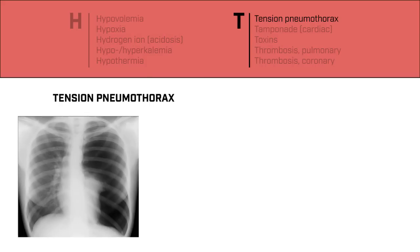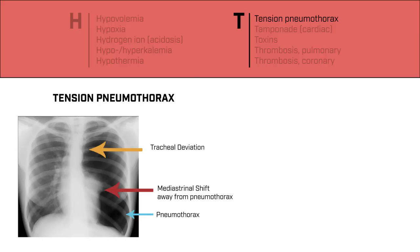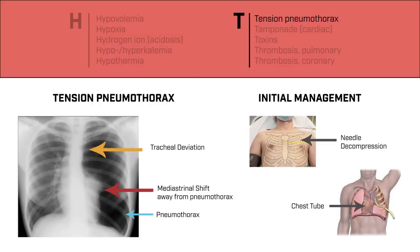Tension pneumothorax occurs when there is air in the pleural space. With enough air in this space, a shift in the mediastinum can occur, which can compress the blood vessels leading back to the heart. As a result, preload is decreased, leading to a decrease in cardiac output, which can lead to cardiac arrest. Patients may have decreased breath sounds on the side of the pneumothorax, and there may be tracheal deviation away from the side of the pneumothorax. These patients can have difficulty with ventilation, and you may even see evidence of a pneumothorax on a bedside ultrasound. You'll treat the pneumothorax by needle decompression and the insertion of a chest tube.